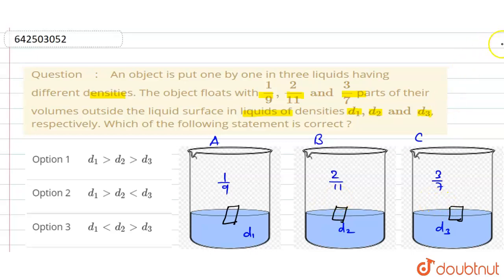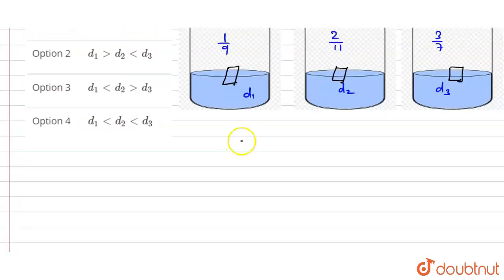And we know that the buoyancy force is given by V × ρL × g. And we know that the buoyancy force is constant and acceleration due to gravity is constant.